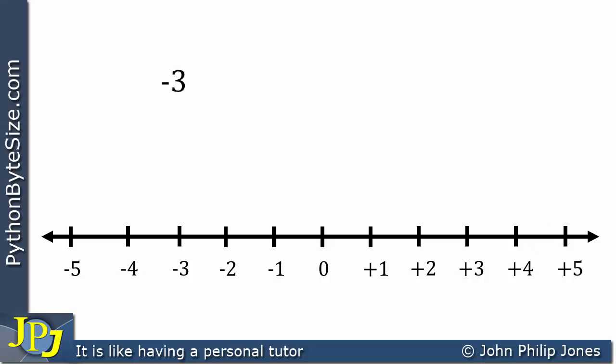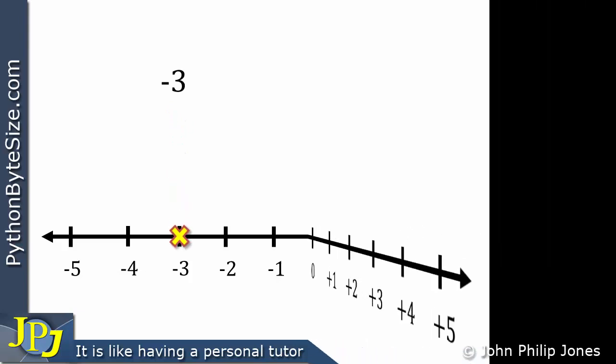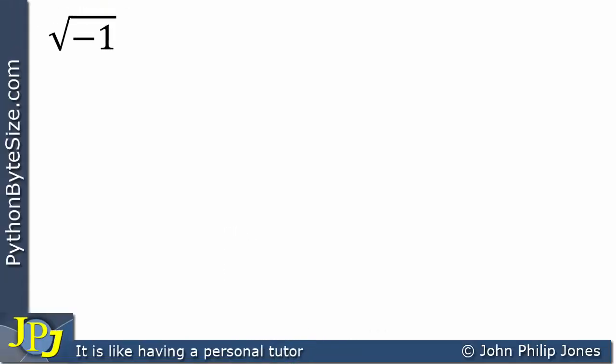Let's choose another one: minus 3. That will be represented on the real number line at the following position. Let's remind ourselves of some work we did in the previous videos. Here you can see I've got the square root of minus 1. The square root of minus 1 doesn't have a real number answer, which means it's not possible to find a real number such that when that number is multiplied by itself it'll give you minus 1. In other words, we cannot find the square root of minus 1 to give us a real number.